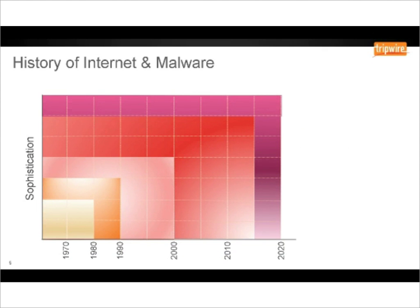As you can see here, we've got sophistication on the y-axis and years on the x-axis. What we're going to do is map where the internet came from. It came from a project funded by the US Department of Defense back in the 1960s. ARPANET was really the foundation of the modern day internet, developed by the University of Stanford. About four years later, the UK got connected up to ARPANET, and at that point it was still just a university network for research, with not too many hosts connected.